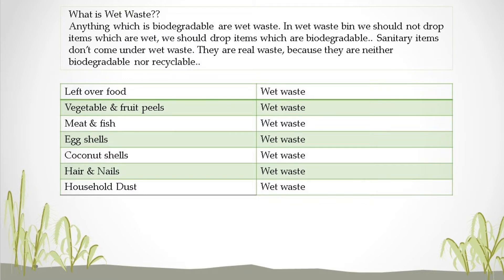Wet waste includes vegetable peels, fruit peels, and food scraps from households. These should go into the wet waste bin. This also includes meat, fish, eggshells, and coconut shells. In wet waste, we also have hair and nails. We also have wet waste bins for these.